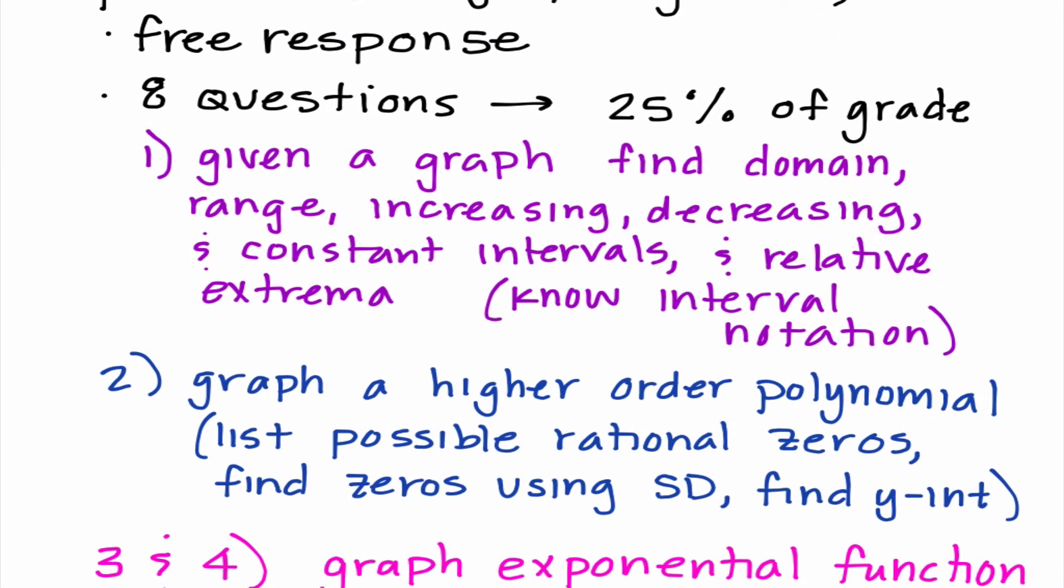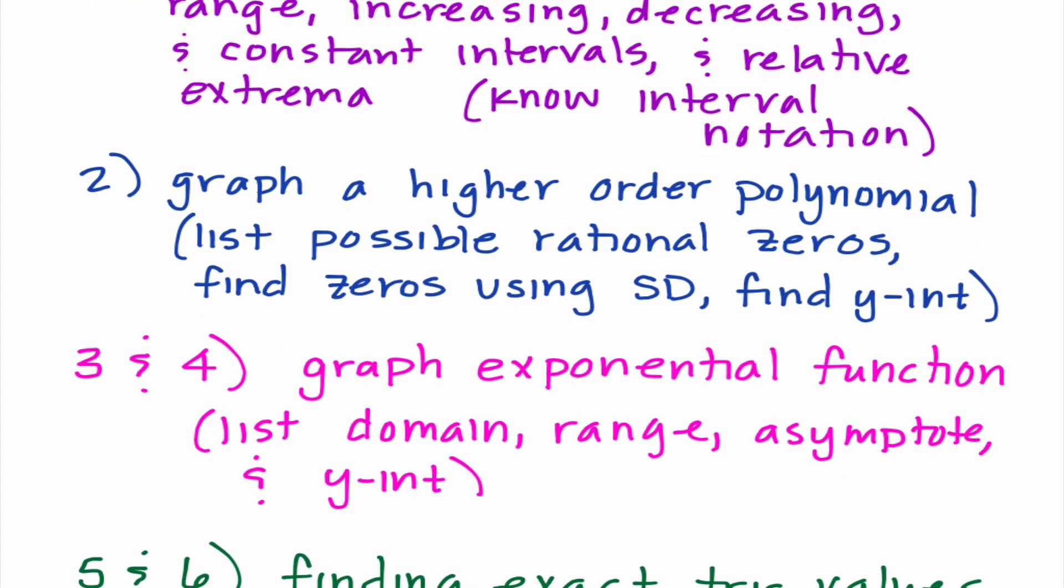The second question comes from chapter two. It's going to give you a higher order polynomial, it might be cubed, it might be to the fourth power, and your job is to graph it. Specific things I'm going to be asking you to do: you need to list the possible rational zeros, you need to know how to find the zeros using synthetic division since you do not have a graphing calculator, and you need to know how to find the y-intercept based on that equation.